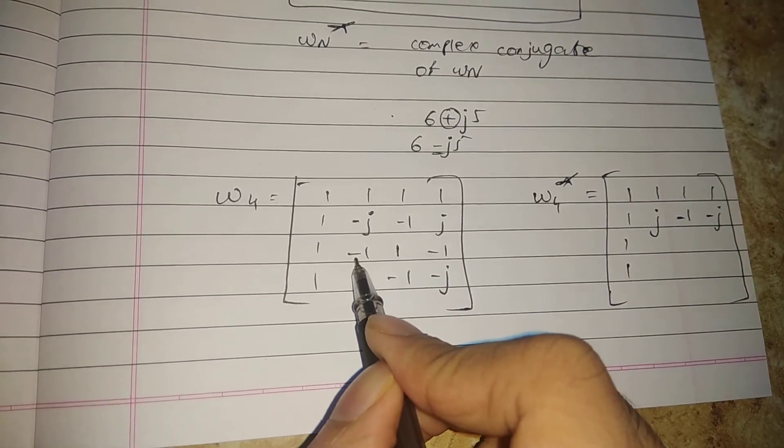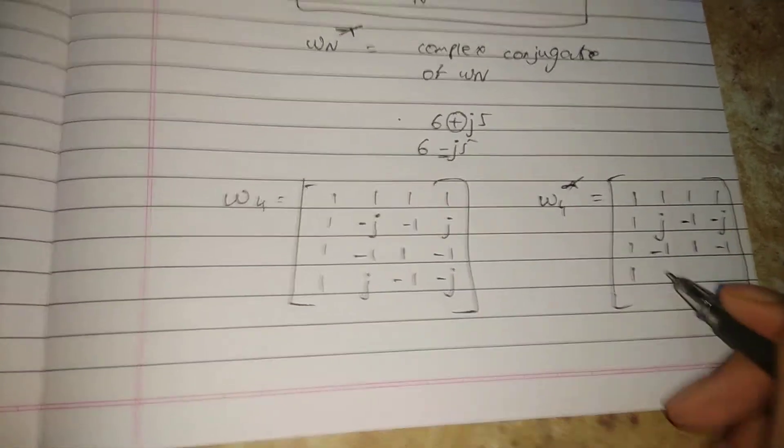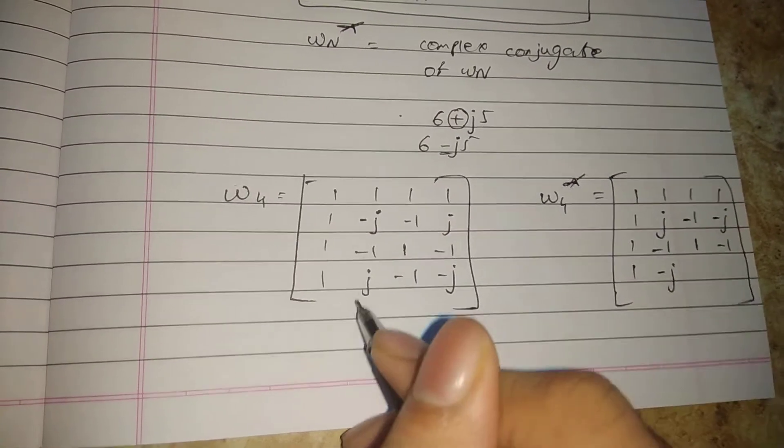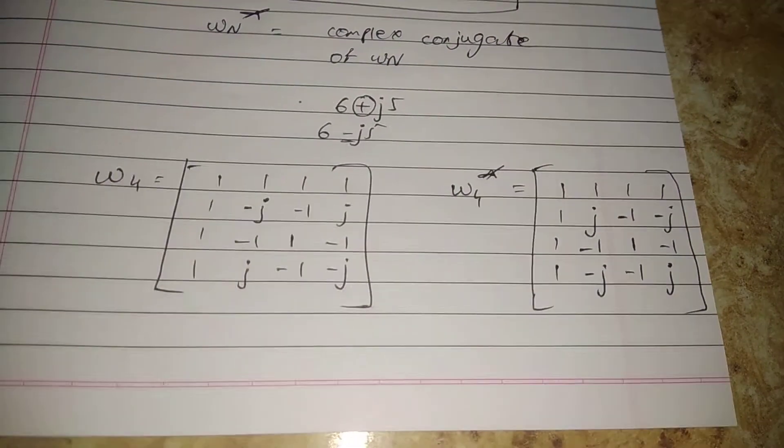Again, minus 1 doesn't change. Only the j term, which is imaginary, changes sign. Minus j becomes plus j. This is the omega 4 star matrix.